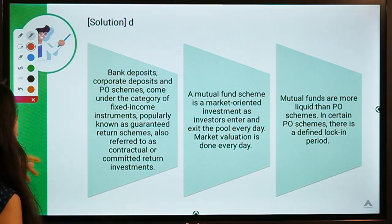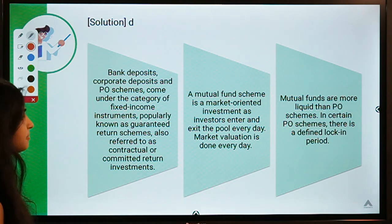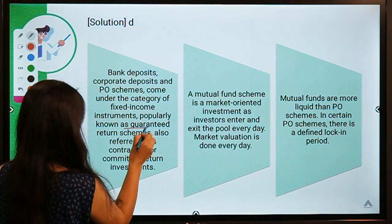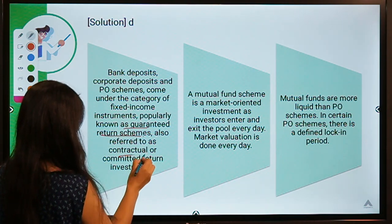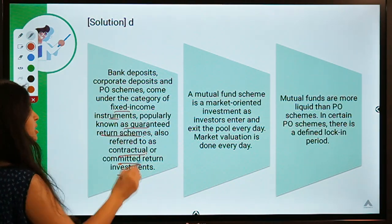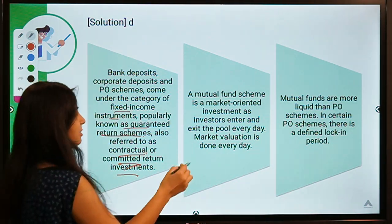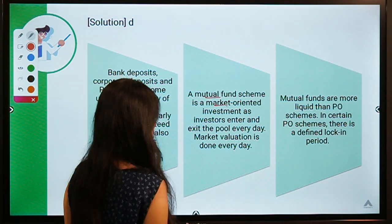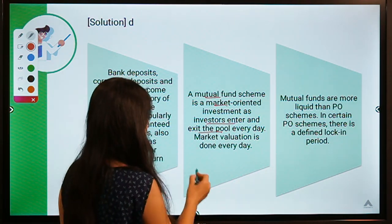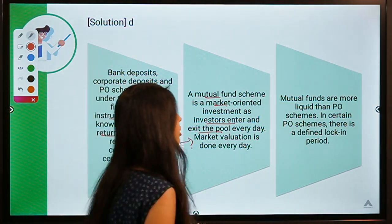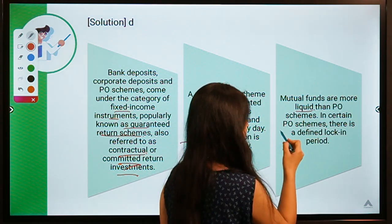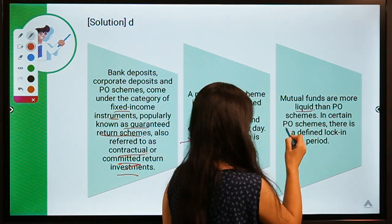These contractual schemes are also known as guaranteed return schemes or fixed income instruments. Mutual funds are market-oriented — investors enter and exit the pool every day and there is daily market valuation. Mutual funds are more liquid, while certain Post Office schemes have a high lock-in period.